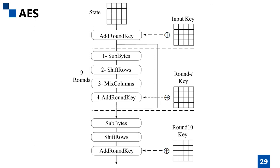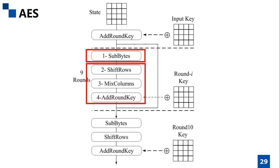The remaining three linear operations — ShiftRows, MixColumns, and AddRoundKey — can be implemented with CNOT gates. We adopt the quantum circuits proposed by Grasso and Langenberg for these three linear operations in this paper, and omit the details.